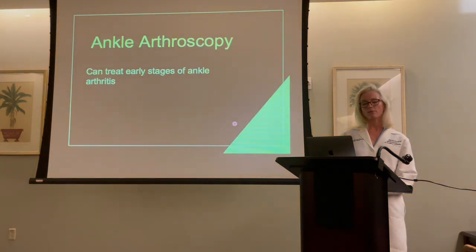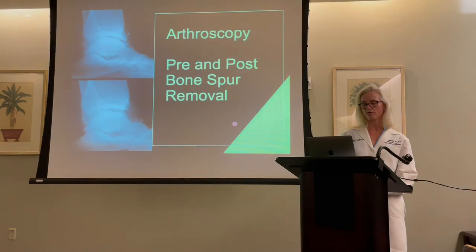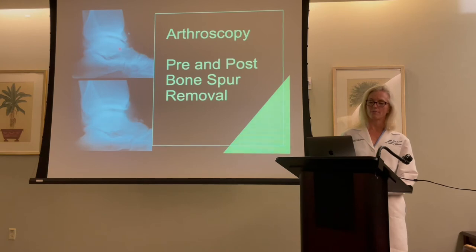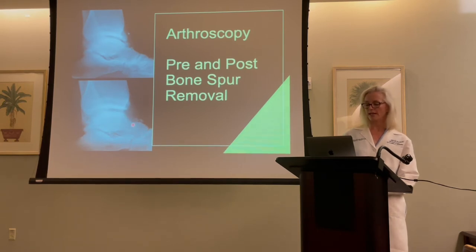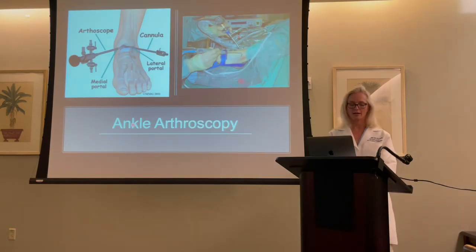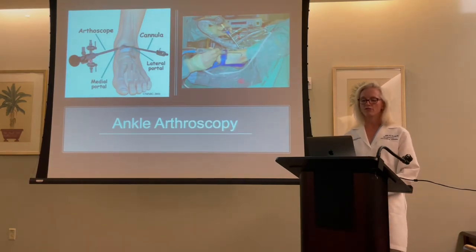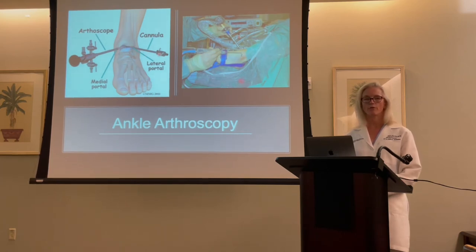Ankle arthroscopy is useful in early stages of ankle arthritis. If you remember that x-ray of the bone spur — here's the spur on the tibia, or the top bone, and the bone spur on the talus, the bottom bone. You can go in with a scope, remove the spurs, and now the ankle can freely come up without the bones hitting. We make two tiny incisions in the front of the ankle: one for the camera or arthroscope, and the other for the workhorse — the burr, the grabber, or whatever we need to clean it up.